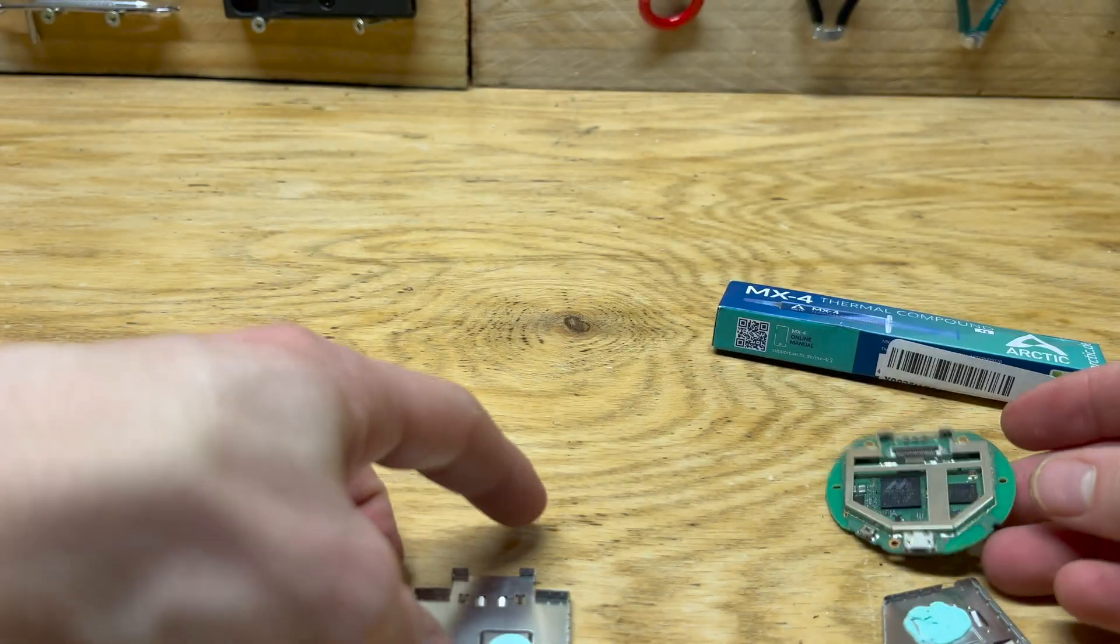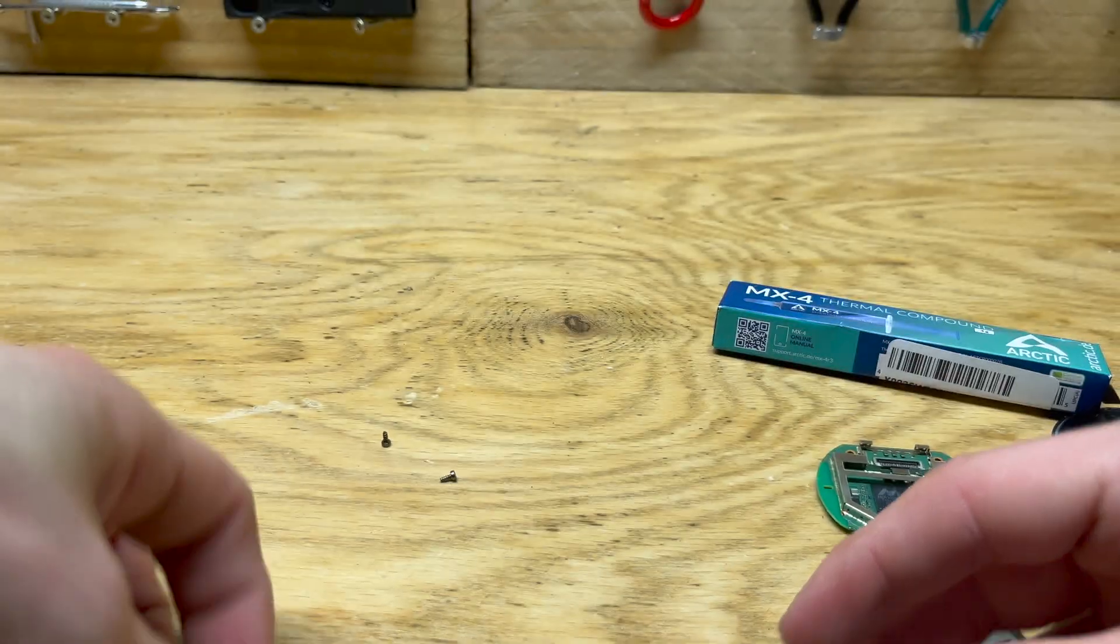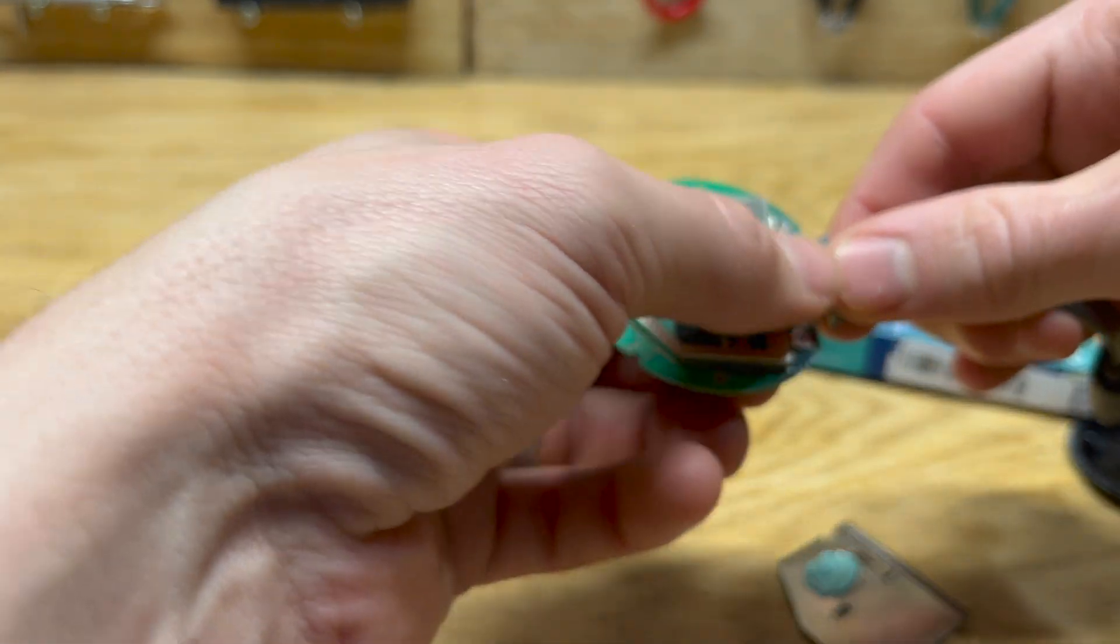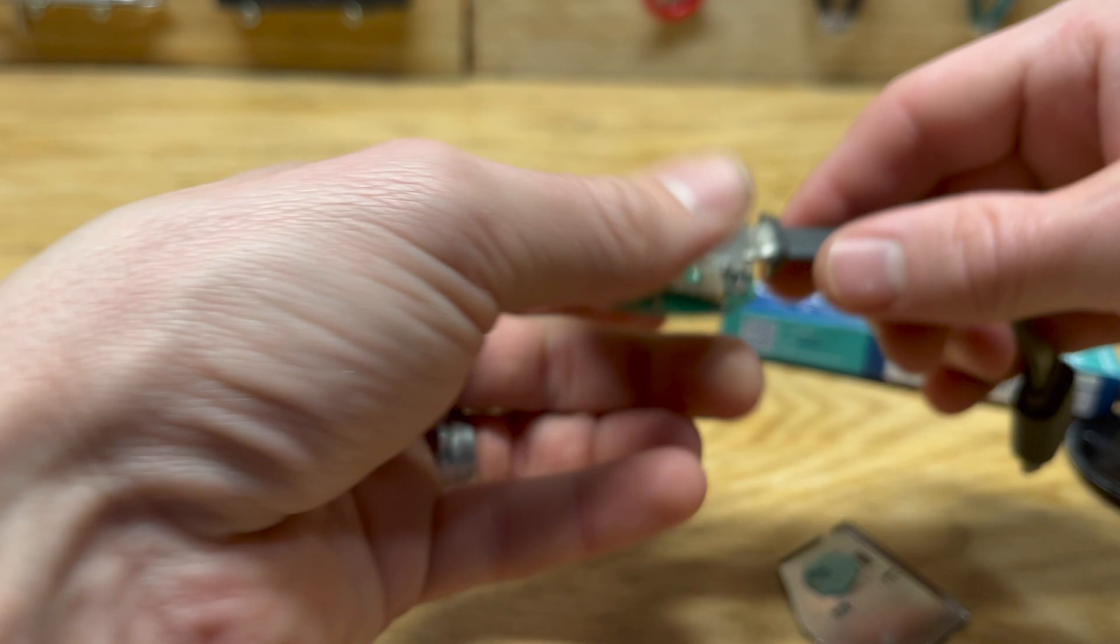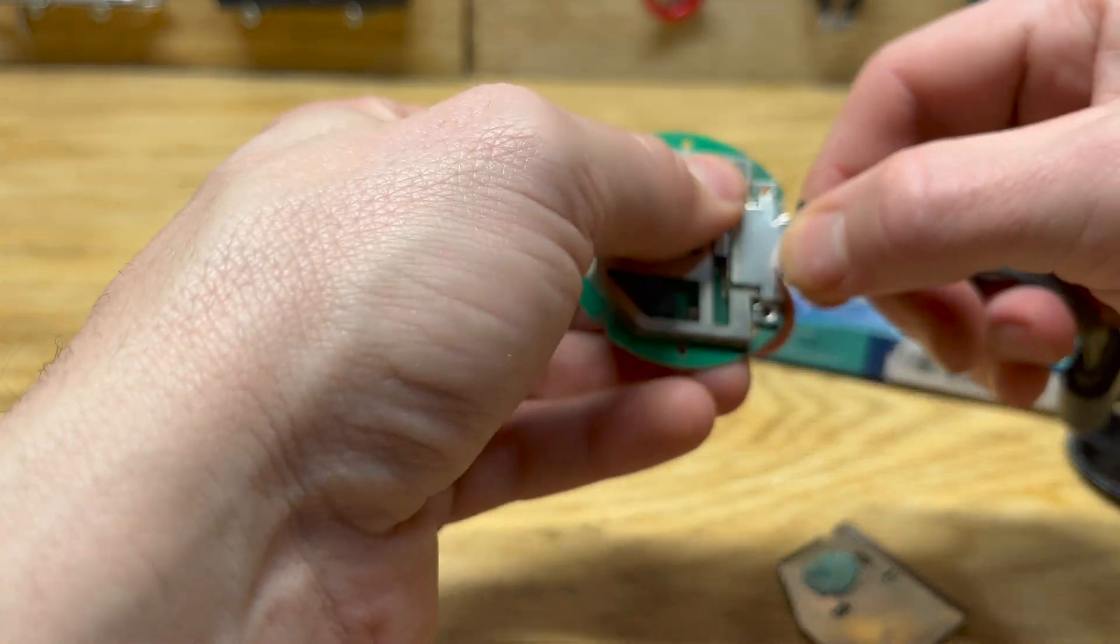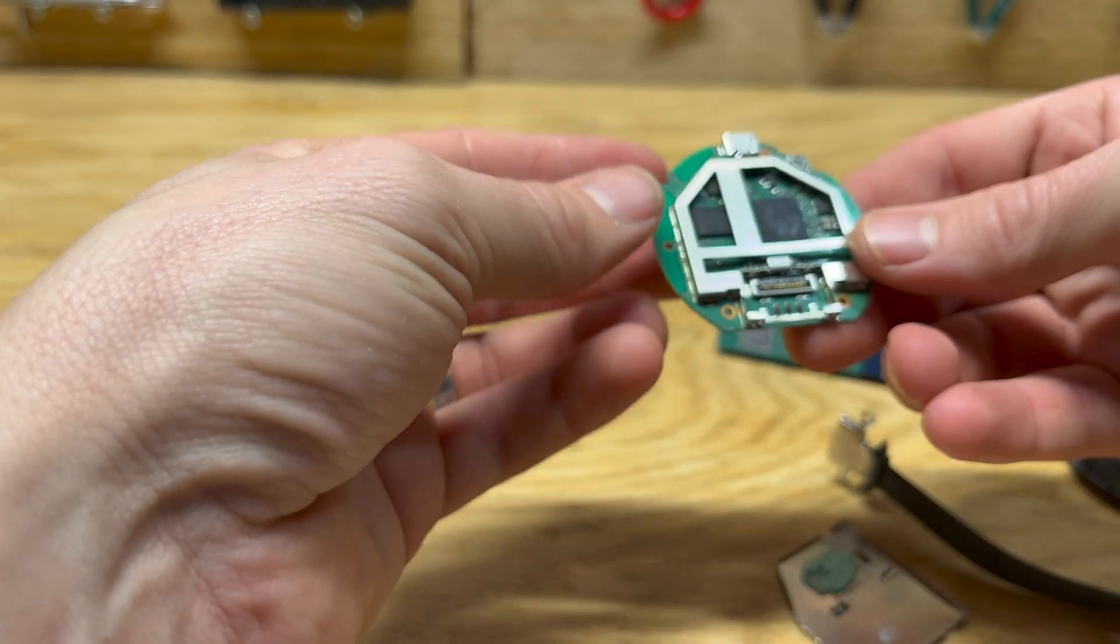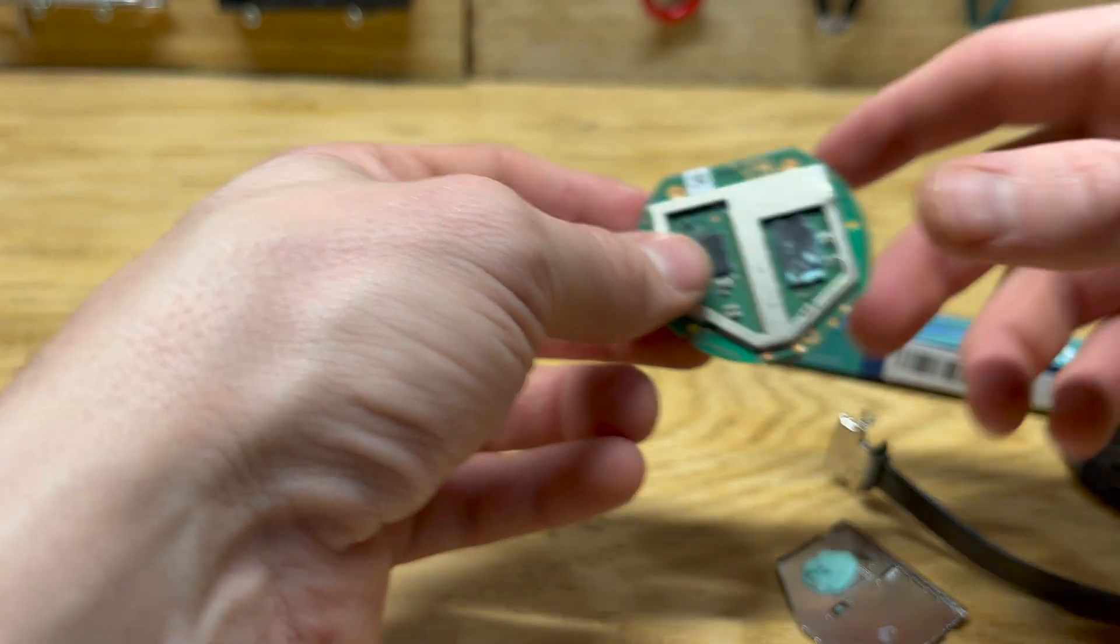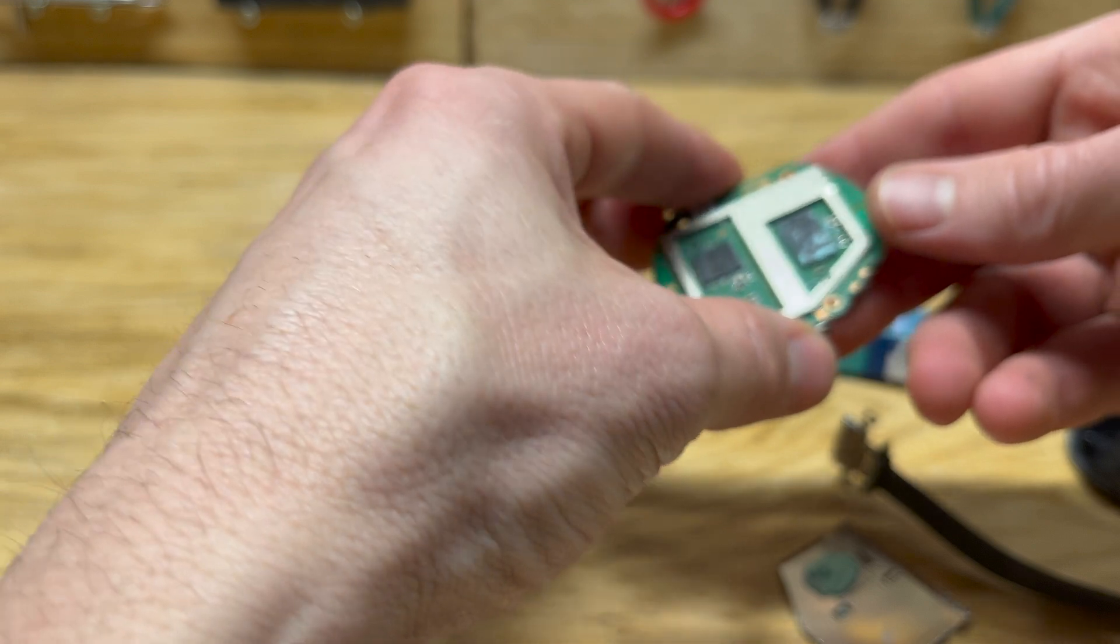My plan is to clean this up and put more thermal compound on it—take off the old stuff. Interestingly enough, the HDMI cord can be detached pretty easily, making for easy cleaning. Otherwise, everything in here looks fine. We're going to do that, put the heat sink on, and go from there.